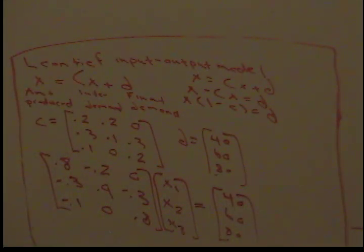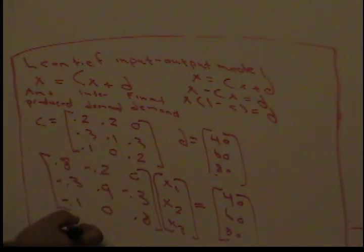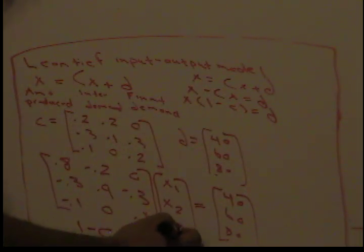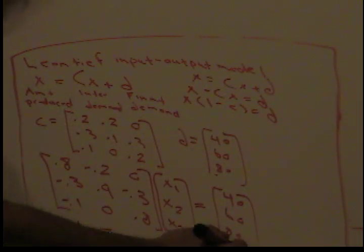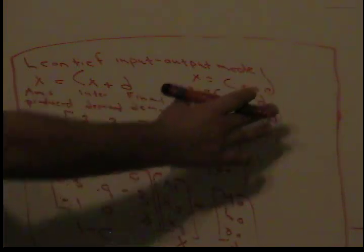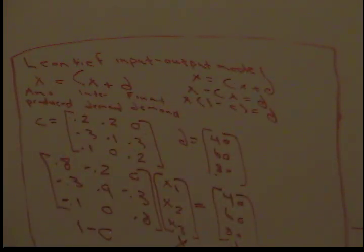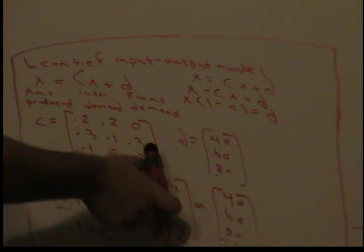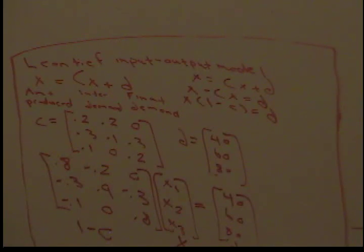Think of this as: (I minus C) is the coefficient matrix, x is our unknown vector, and D is the demand vector. To solve this system, we put the coefficient matrix and demand vector together into a 3 by 4 augmented matrix and row reduce.